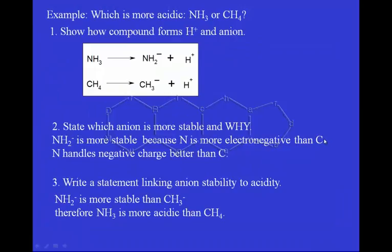CH4 is treated the same way — we make that into CH3- and H+. In the second step, we figure out which anion is more stable and why. NH2- is more stable than CH3- because N is more electronegative than C, and therefore it handles the negative charge better. Because NH2- is more stable, NH3 is going to form more NH2- than CH4 will form CH3-. If we're getting more NH2-, we're going to get more H+, which means NH3 is going to be more acidic.